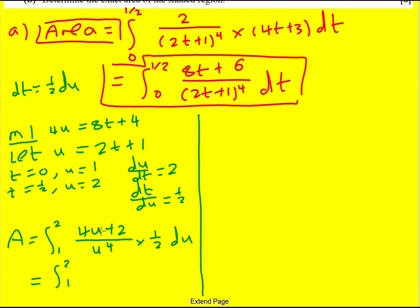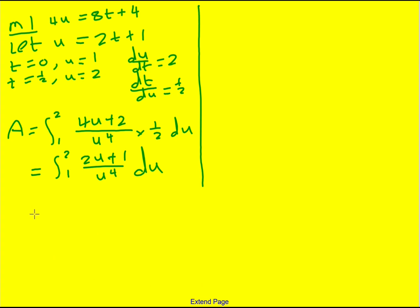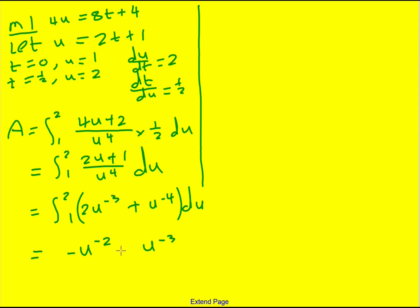Taking the half inside, we get (2u + 1)/u⁴, which we can write as 2u⁻³ + u⁻⁴. Integrating: add one to the power and divide by the new power, giving −u⁻²  minus (1/3)u⁻³, evaluated from 1 to 2. Substituting u = 2 gives −7/24, and substituting u = 1 gives −4/3, so we get −7/24 minus (−4/3), which gives 25/24.